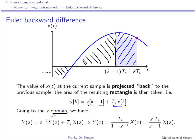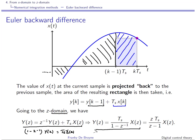So this is the description in discrete time. What we can do is go to the Z domain. If we take the Z transform of this equation, neglecting initial conditions, this is what we obtain. Now we can look at the transfer function Y/X. We'll have 1 minus Z⁻¹ times Y(Z) equal to Ts·X(Z). This is the description of my integrator in discrete time using the Euler backward difference.